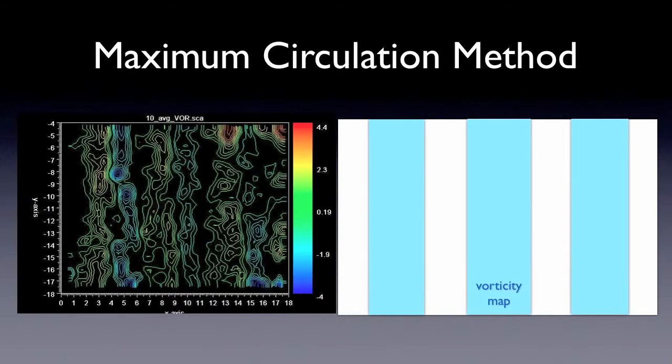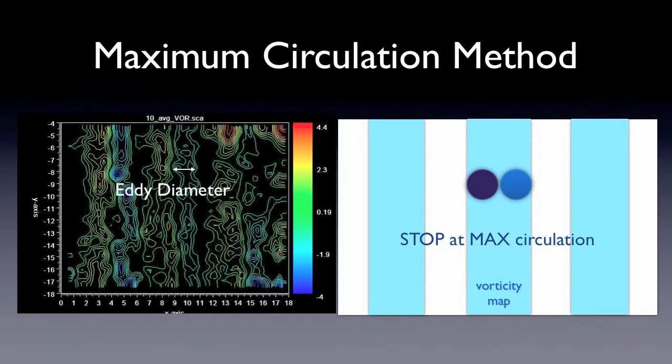Here is a demonstration of the maximum circulation method. The left picture is the vorticity map, and the right picture is the demonstration. The principle is similar to the 25% vorticity method. First, find the vortex core. And then, expand the eddy size until the edge reaches the maximum circulation. As you can see in the left picture, the half width of the wigs will be the eddy diameter.